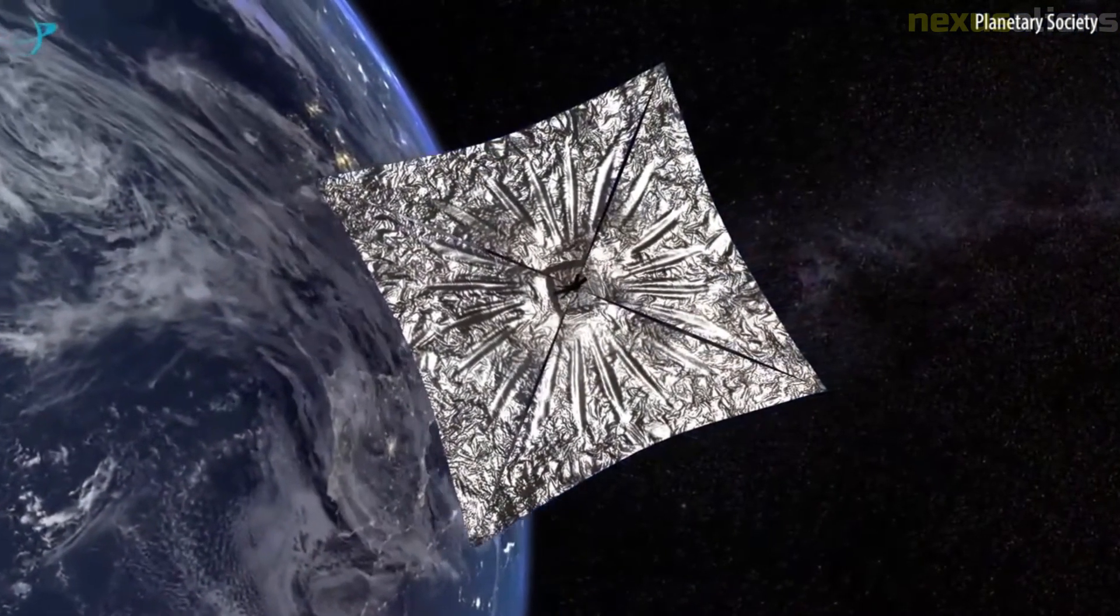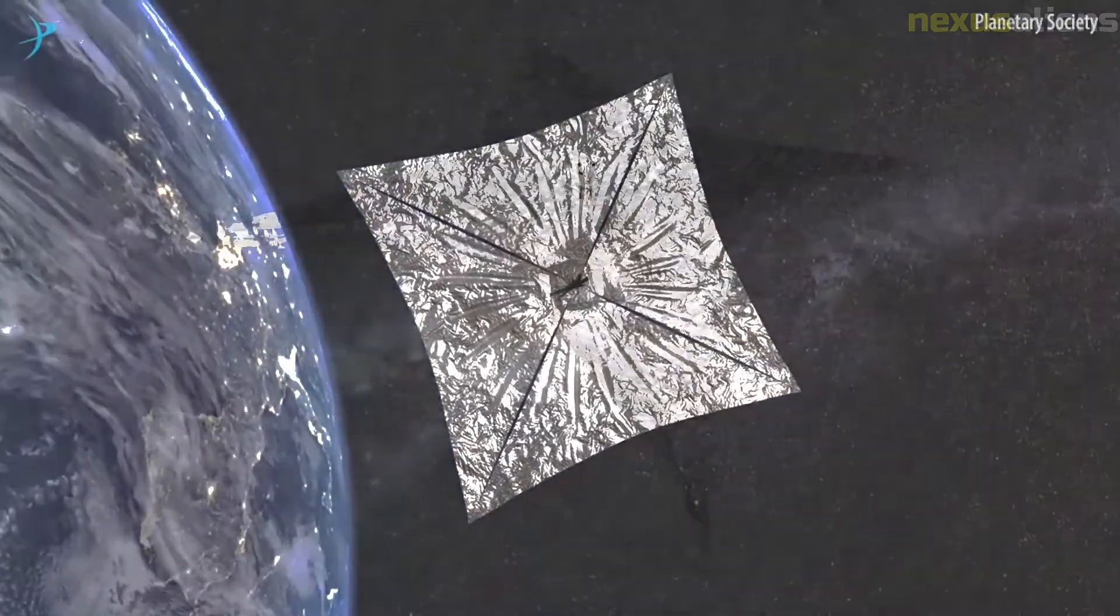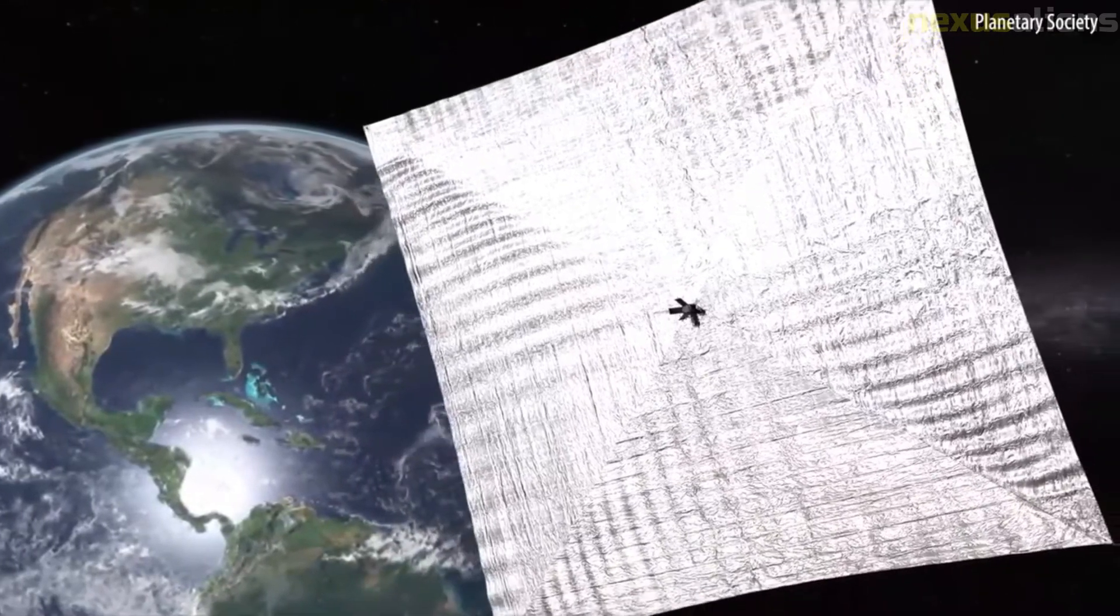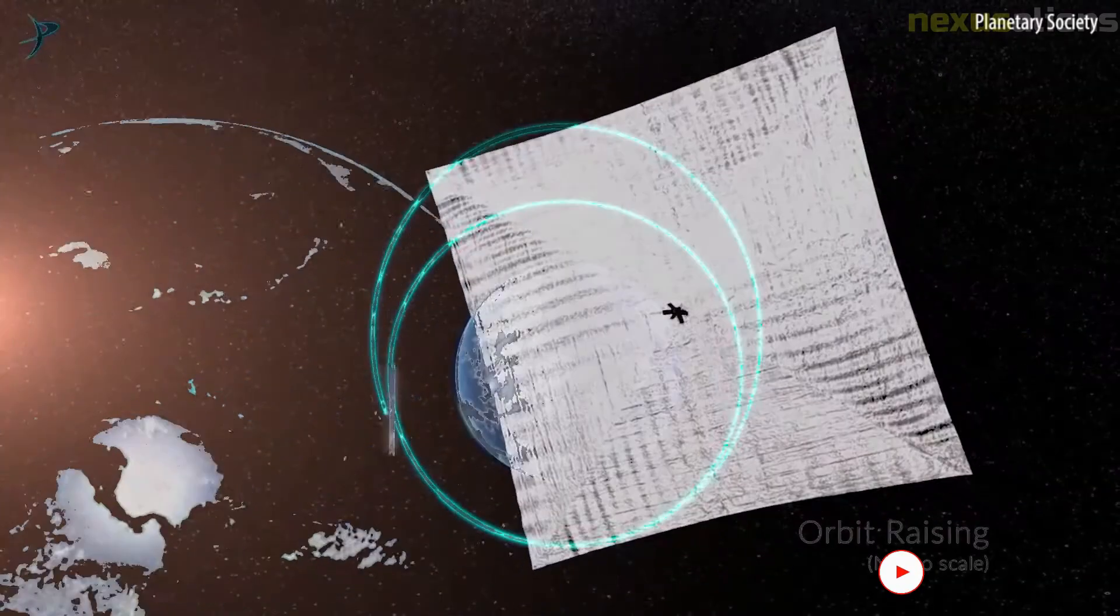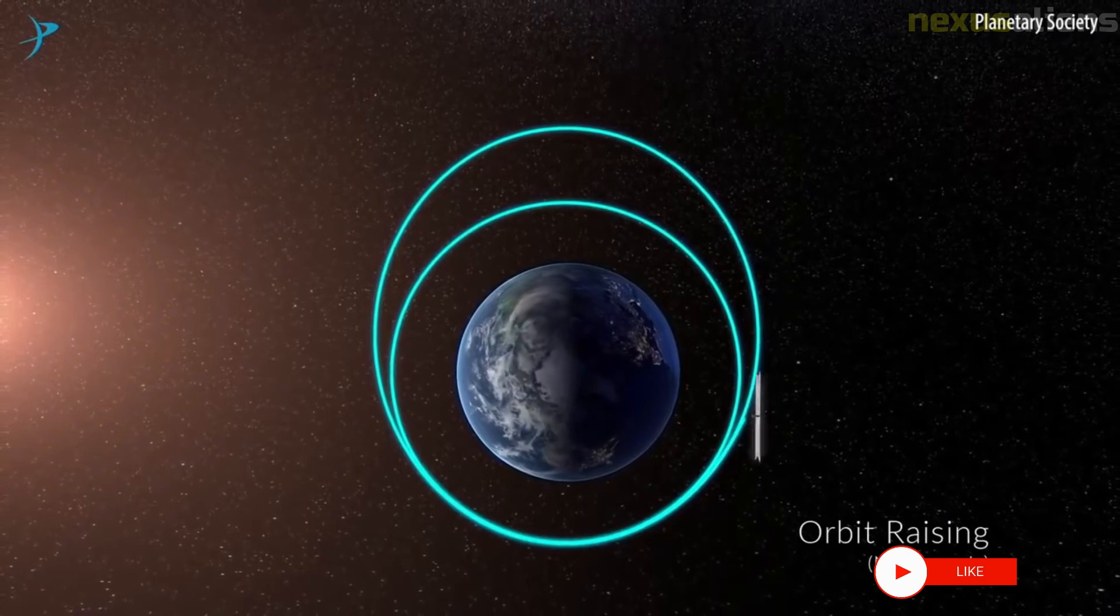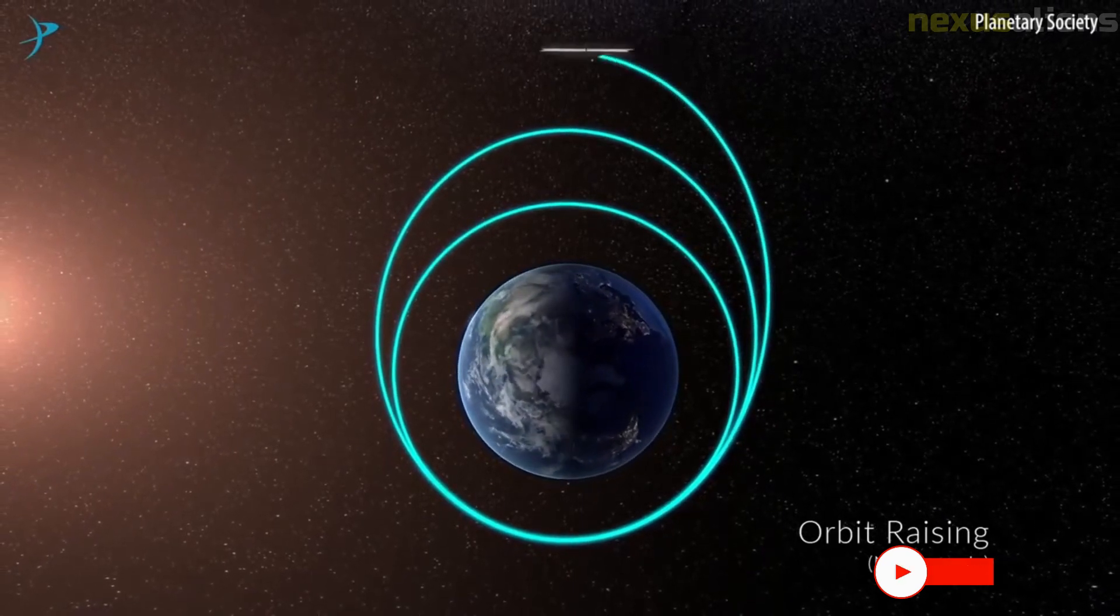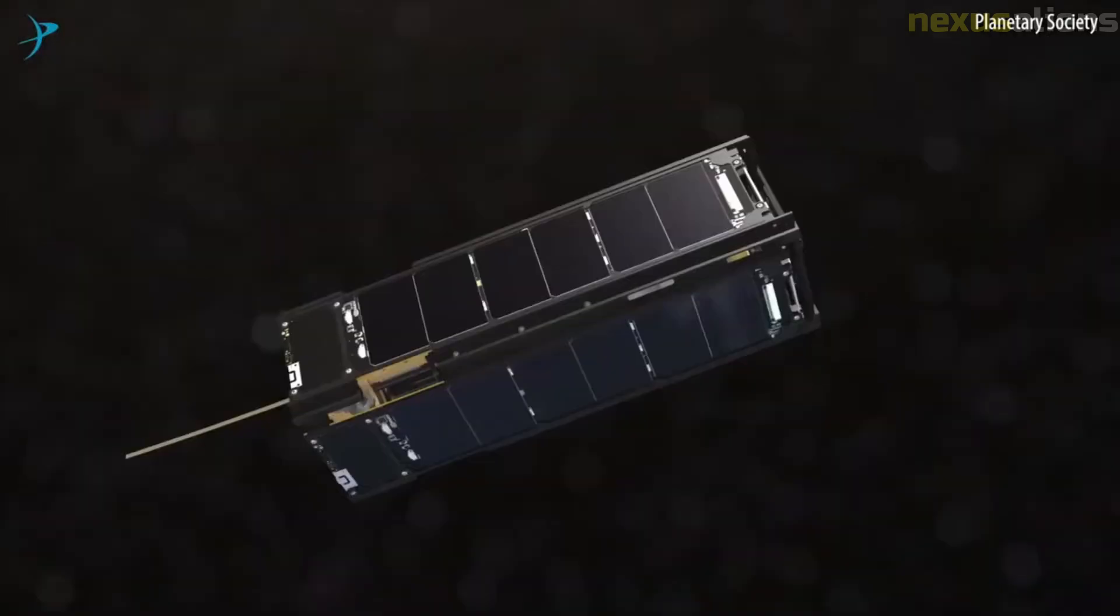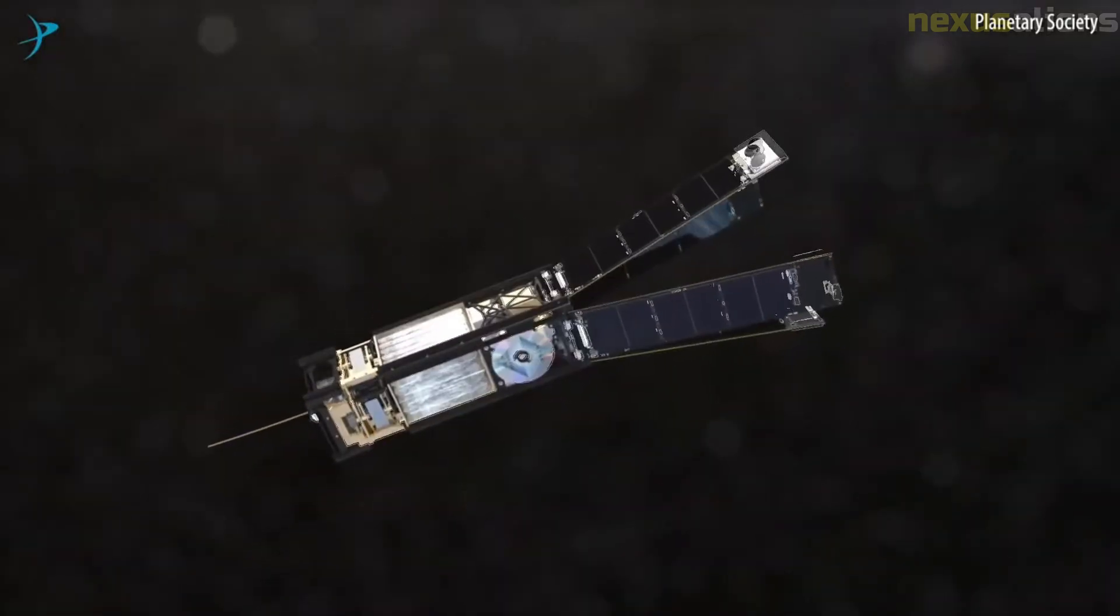Oumuamua's light curve, assuming little systematic error, presents its motion as tumbling rather than spinning, and moving sufficiently fast relative to the sun that it is likely of extra-solar origin. Extrapolated and without further deceleration, Oumuamua's path cannot be captured into a solar orbit, so it would eventually leave the solar system and continue into interstellar space.